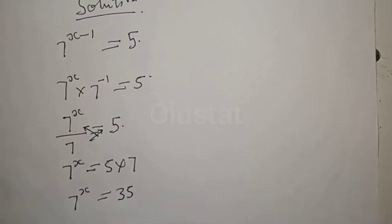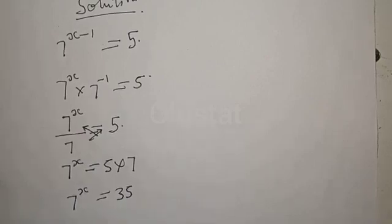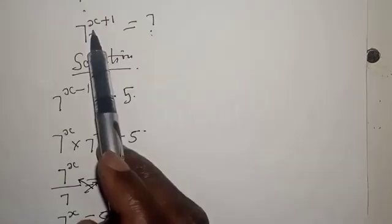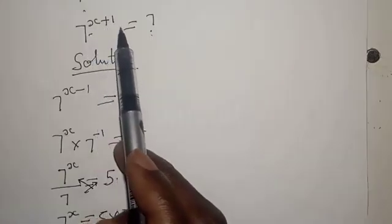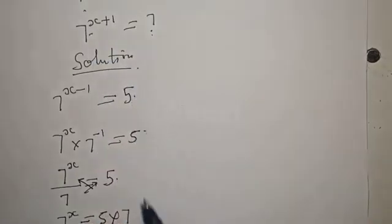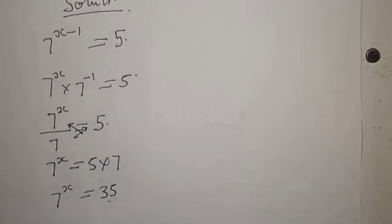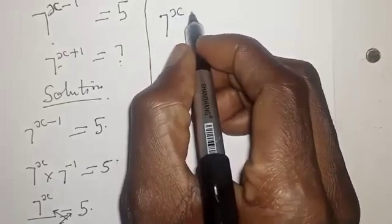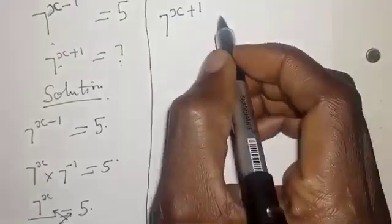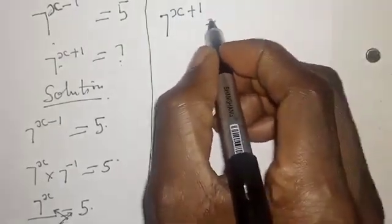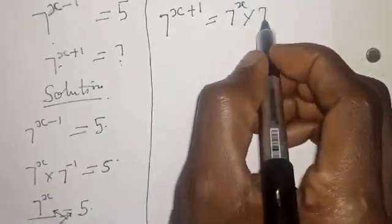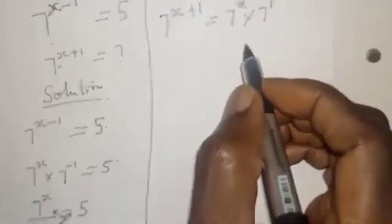So 5 times 7 is 35. From the question we have 7 raised to power x plus 1 as unknown. This can be expressed as 7 raised to power x plus 1, written as 7 raised to power x multiplied by 7 raised to power 1.